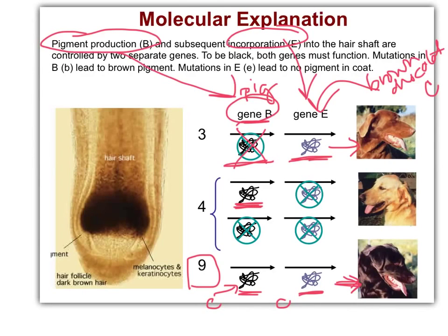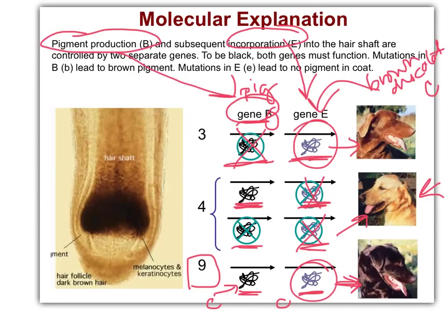If we make the black pigment — capital B — but can't incorporate it, you look yellow. That's just the background color; it's not albino since other pigment systems are still working. If we have no black pigment and no incorporation, you're still going to look yellow. So any time there's a mutation in the gene putting pigment into the follicles, you won't get brown or black. You need both black pigment and incorporation to get black; only incorporation gives you chocolate. That's recessive epistasis.